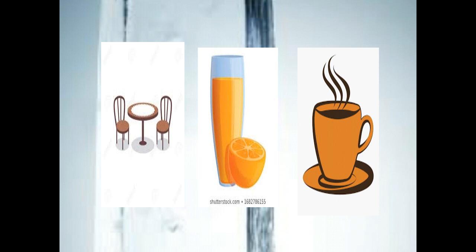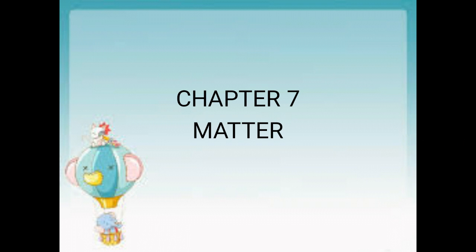The second one is a juice, and the third one is a hot coffee. The first figure shows they are hard — the table and chair are hard. The second one is a liquid, and the third one is hot, and it seems steam will come out of the hot coffee. These are objects present around us, substances which we use in our day-to-day life.